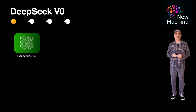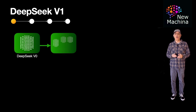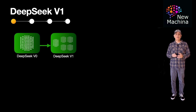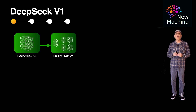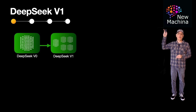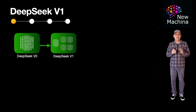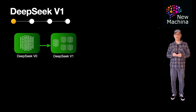The next model that came along was DeepSeek V1, which was released a few months later in January 2024. DeepSeek V1 went from a transformer architecture to a mixture of experts, or MoE for short. V1's mixture of experts architecture introduced both shared and routed experts. If you want to learn more about mixture of experts, I have a video going deeper into this. DeepSeek V1's MoE architecture featured 16 billion total parameters with 2.7 billion activated per token.